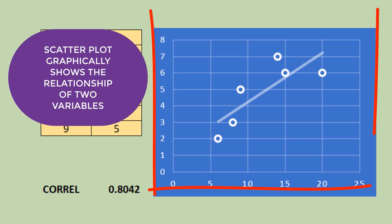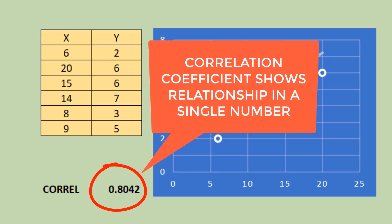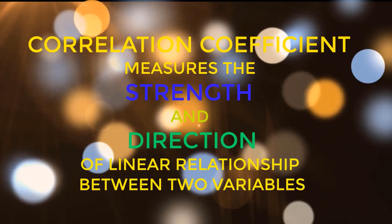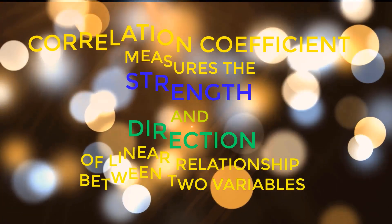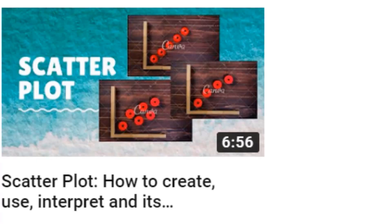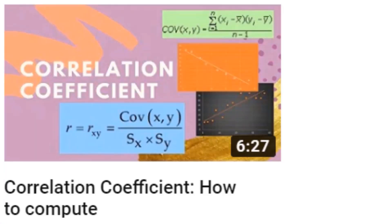While a scatterplot graphically shows the relationship between two variables, a correlation coefficient shows this relationship in one number. It measures the strength and direction of a linear relationship between two variables. You can watch videos on how to make a scatterplot and also how to compute the correlation coefficient.